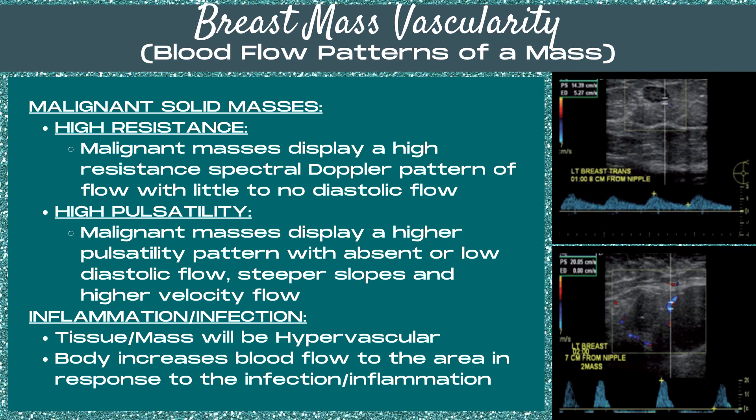Malignant solid masses on spectral Doppler display a more high resistance pattern with little to no diastolic flow in the waveform. They also display a higher pulsatility pattern with absent or low diastolic flow, steeper slopes, and higher velocity flow than benign masses. Note that with inflammation and infection in the breast, tissue and the mass will be hypervascular, because the body increases blood flow to the area in response to the infection or inflammation.